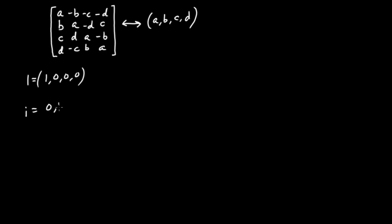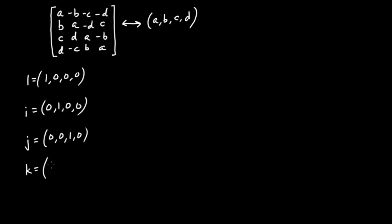Another simple quaternion would be 0, 1, 0, 0, and that's also equal to i. Then I have j, where the third component is equal to 1 — that'd be 0, 0, 1, 0. And then finally, I have k, which would be 0, 0, 0, 1. And what I'd like to do is convert each of these to their matrix form.